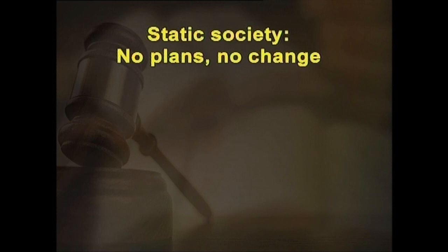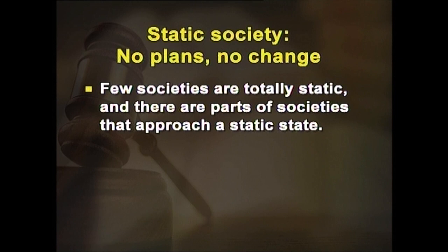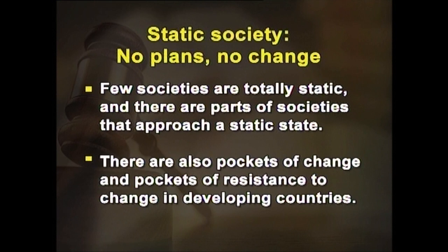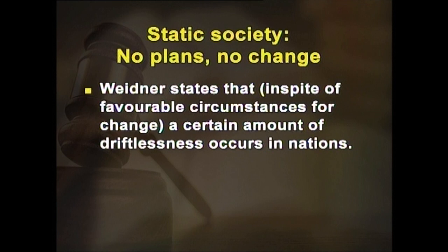Model nine: static society — no plans, no change. Few societies are totally static, but there are parts of societies that approach a static state. There are also pockets of change and pockets of resistance to change in developing countries. Wiedner states that in spite of favorable circumstances for change, a certain amount of driftlessness occurs in nations. In this model, a crisis may not lead to desired change but may be viewed fatalistically, whether in a planned or unplanned manner.